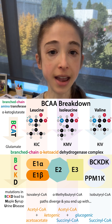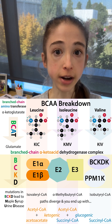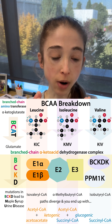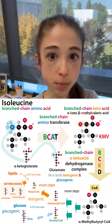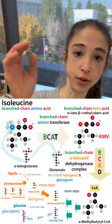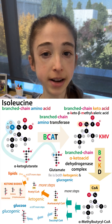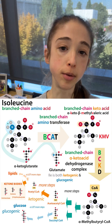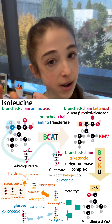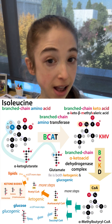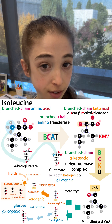You might be wondering, what happened to the amino part? Well, there's a transaminase that takes off the amino part, and that's why we go from branched chain amino acids to branched chain alpha-keto acids.